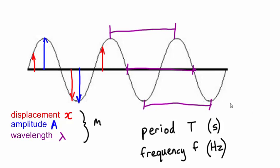The relationship between the period and frequency is that the frequency equals one divided by the time period.